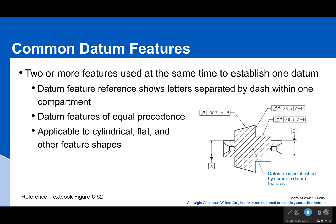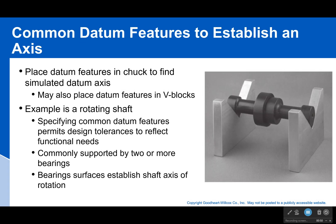If it's using a common datum feature, you would put both feature symbol letters right here separated by a dash. Now why do you do this? Usually it's because that's how it's held. In this case, let's say this is like a belt — there's going to be a belt that attaches around here and this might be held in two bearings. So the axis is not just one or the other; it's actually both that are holding it in place, and it's rotating freely through both, so it's the axis of both that we care about. That's a very common case where we have these common datum features.